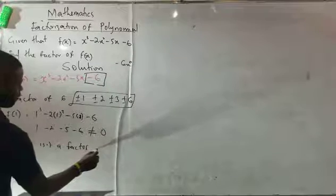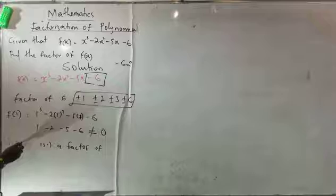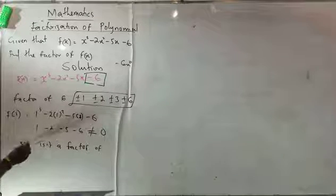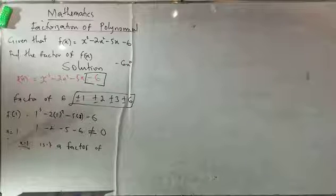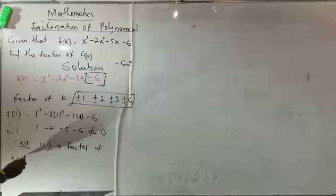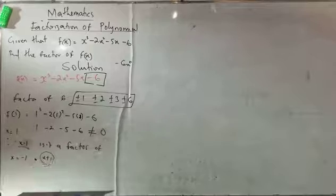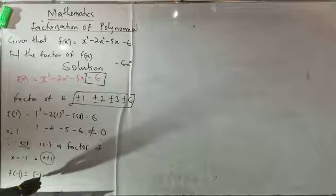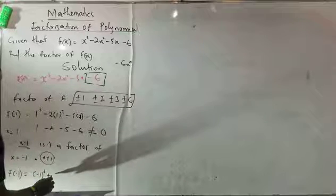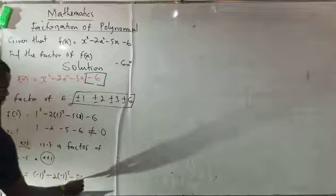Therefore, x = 1—plus 1 is not a factor. Let me move on to f(-1) when my x equals minus 1. It means, therefore, it will be x + 1. You know, this is a factor now. Let's try to work on it. It means f(-1) will be equals to bracket of -1 cube minus 2 bracket of -1 squared minus 5 bracket of -1 minus 6.